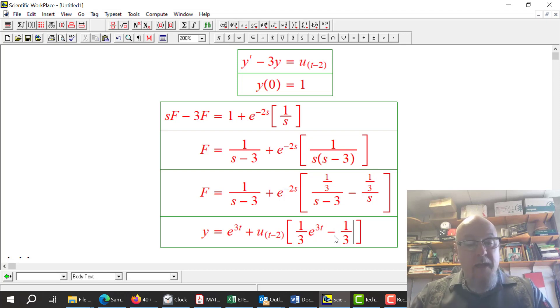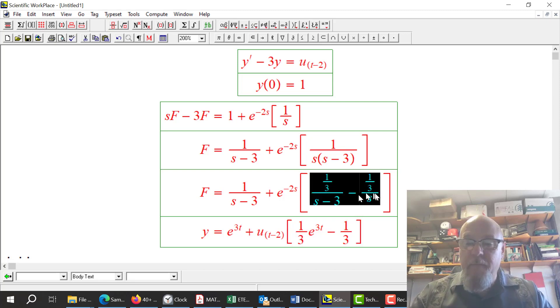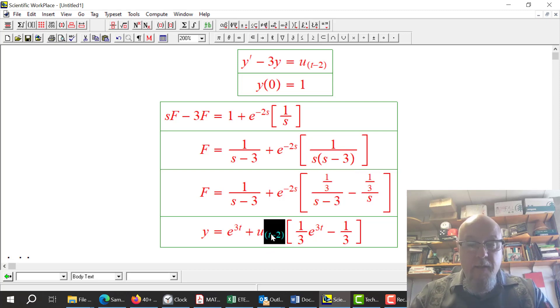So I'm not done yet. That's what the square bracketed piece would un-Laplace to on its own. But because it's multiplied by the Heaviside step function, everywhere there's a t, I have to put a t minus 2. The argument inside the square bracket has to exactly match the argument of the Heaviside step function.